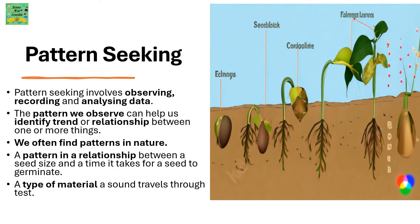Pattern Seeking. Pattern seeking involves observing, recording, and analyzing data. The patterns we observe can help us identify trends or relationships between one or more things. We often find patterns in nature, for example a relationship between seed size and the time it takes for a seed to germinate, or the type of material that sound travels through.